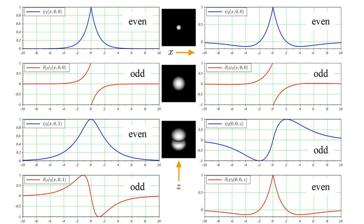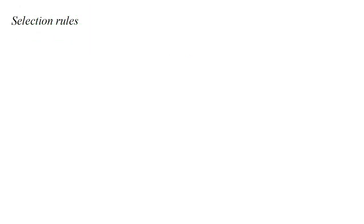For a transition between the 1s and 2pz orbitals, for the x and y coordinates we have the product of even times odd, which is odd, so those terms vanish. But for the z coordinate, we have the product of even times even, which is even, so that integral can be non-zero and produce a non-zero transition rate. These considerations of the even and odd symmetries of the wavefunctions and their derivatives are summarized in so-called selection rules.